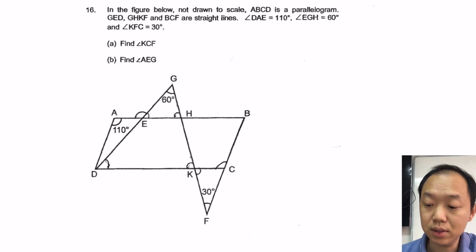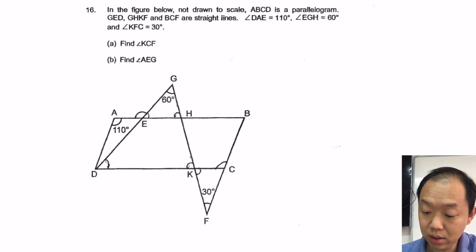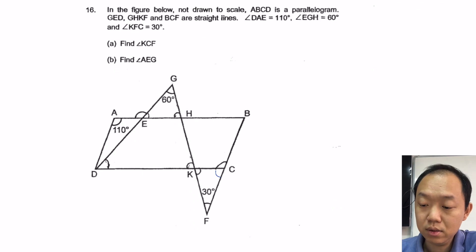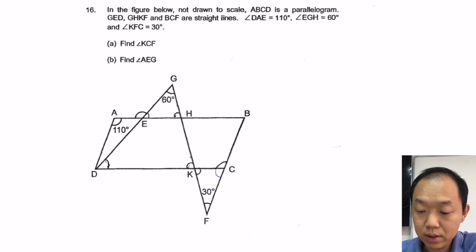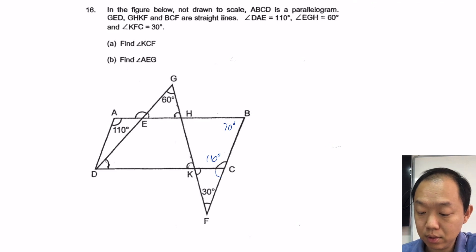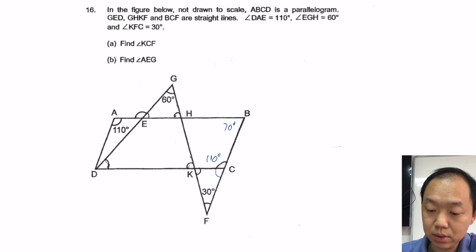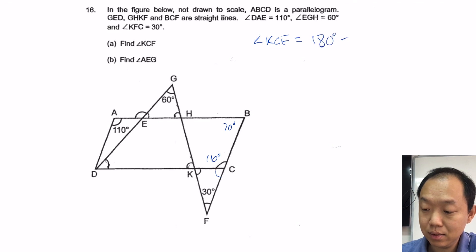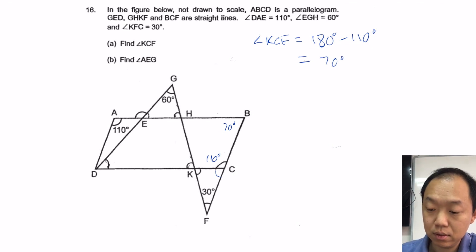In the figure below, not drawn to scale, ABCD is a parallelogram. Find angle KCF. DAE is 110 degrees. Since ABCD is a parallelogram, I can infer that this angle is 110 degrees, so this one is 70 degrees, and the opposite is 70 as well. Angle KCF equals 180 minus 110, so it's 70 degrees. That's part one.